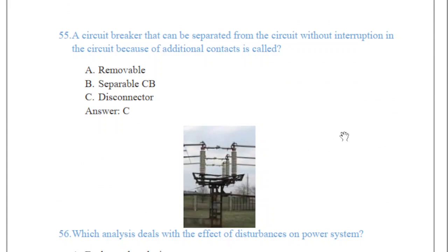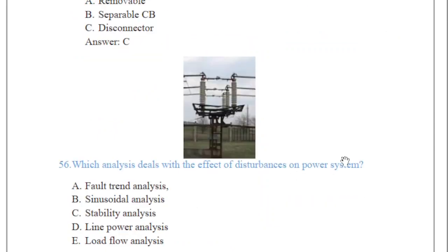Question 55: a circuit breaker that can be separated from the circuit without interruption, because of additional contacts, is called — you have three options: removable, separable, and disconnector. The answer is C, disconnector. In electrical engineering, a disconnector is an isolator switch that mainly disconnects two circuit breakers in a circuit. It is used to ensure that the electrical circuit is completely de-energized for service or maintenance.